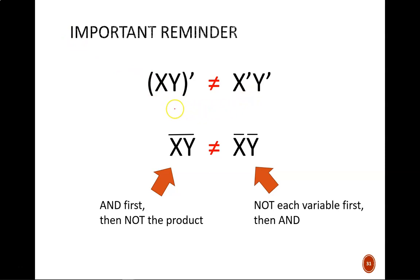The left side indicates that we AND first, NOT later. The right side indicates that we NOT each variable first, then AND afterward.